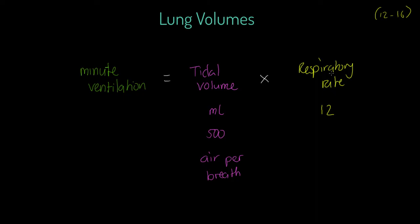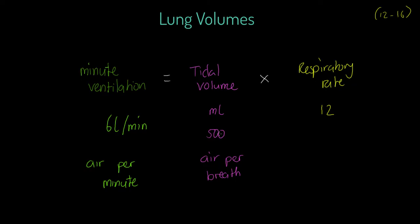Think about this: we've got the number of breaths per minute, and we've got the amount of air per breath. What, therefore, must minute ventilation be? It's the amount of air per minute. As a result of that, we can quickly calculate that it's around about 6 litres of air at rest — 6 litres per minute. This is how much air we breathe in and out of our lungs per minute. We're not consuming 6 litres of oxygen — we're taking 6 litres in per minute and pushing 6 litres out per minute.